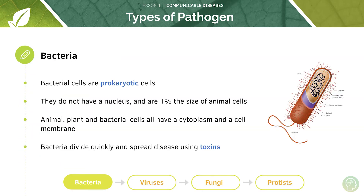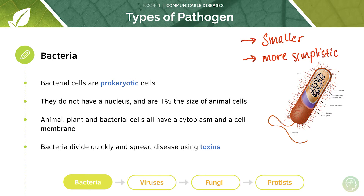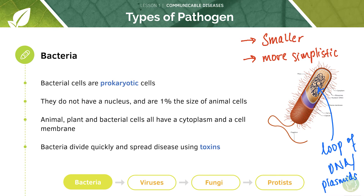Let's take a look at bacteria. Bacterial cells are prokaryotic cells — they are smaller and more simplistic than eukaryotic cells. They don't have a nucleus; instead they store their DNA as a loop of DNA or in plasmids. Bacteria can divide very quickly, which is one reason why they can cause disease, and they also produce secreted molecules called toxins which can infect or destruct other cells in the body.